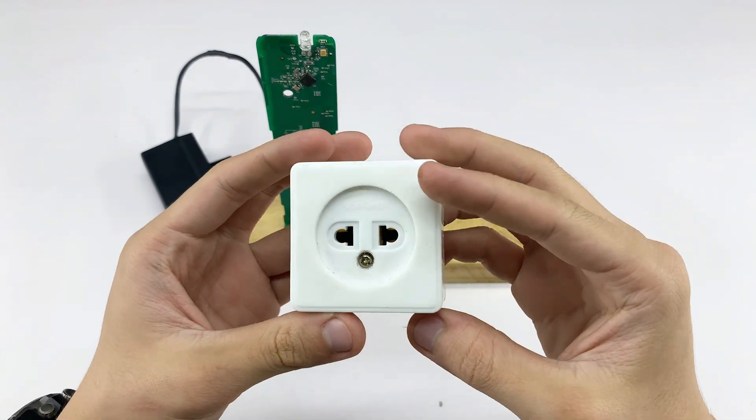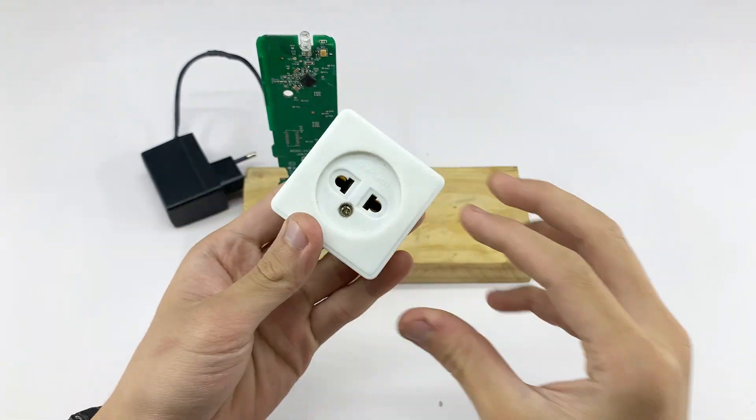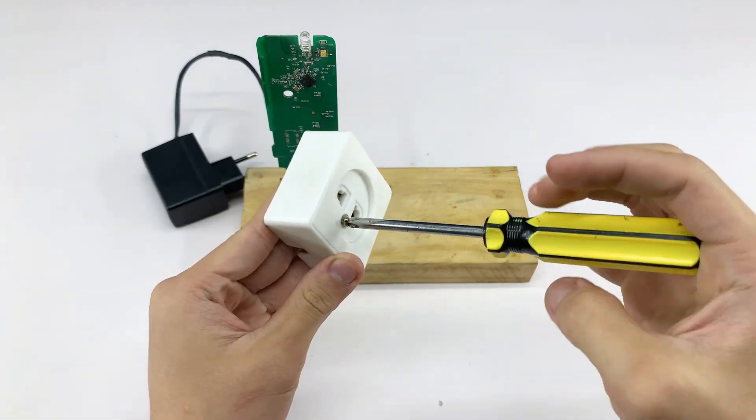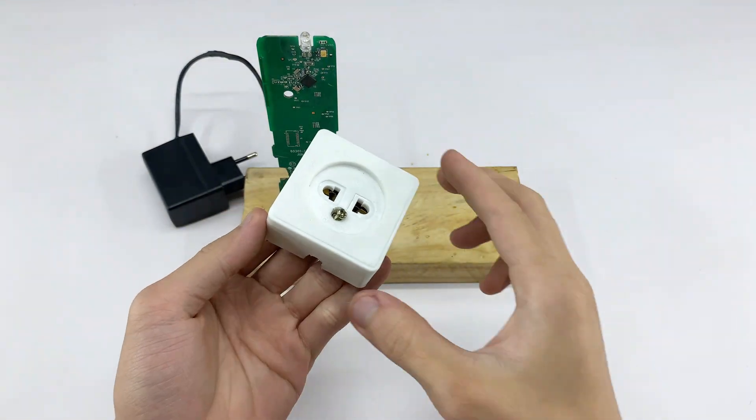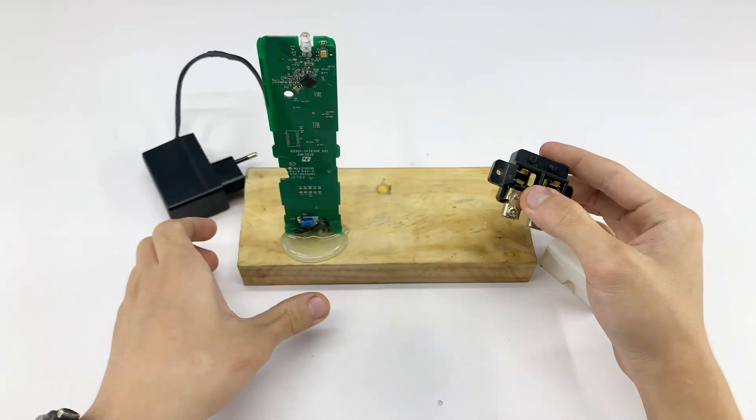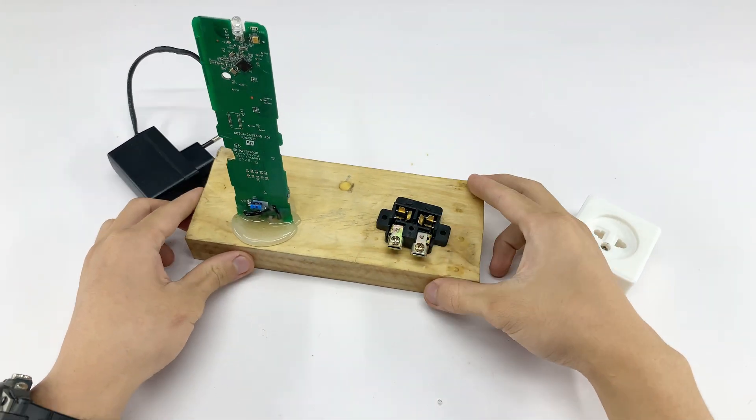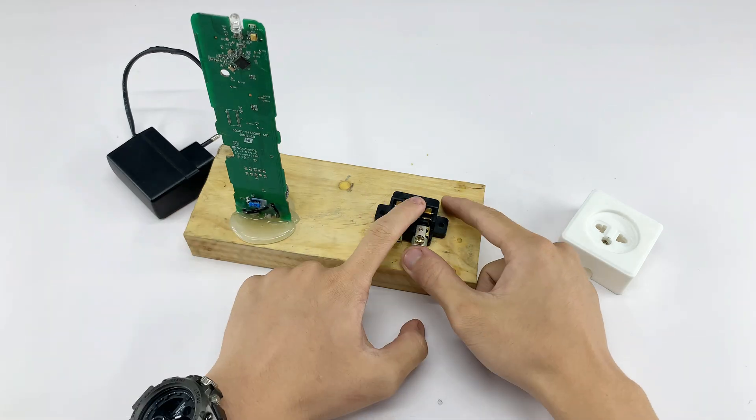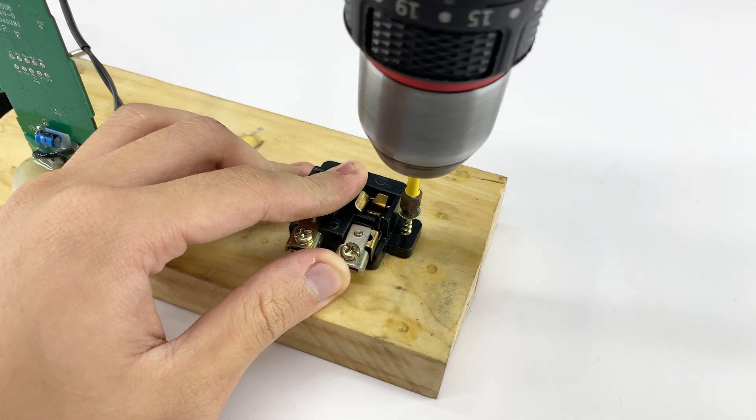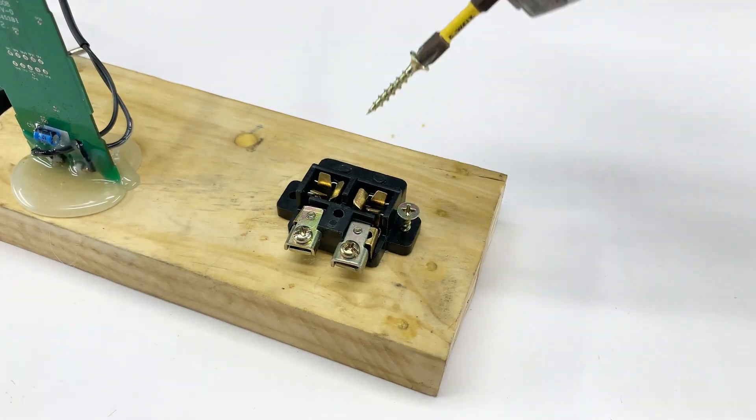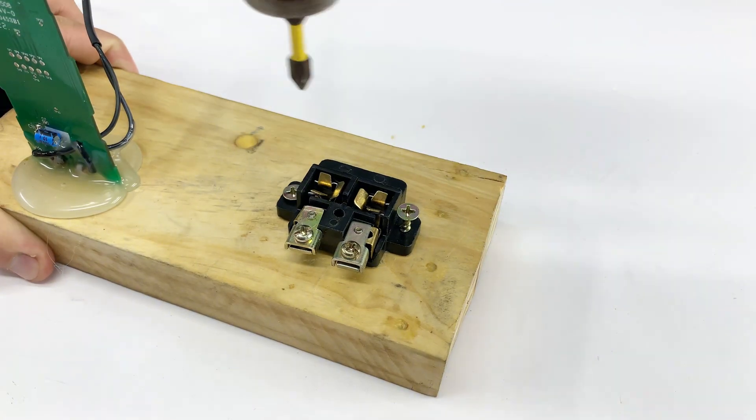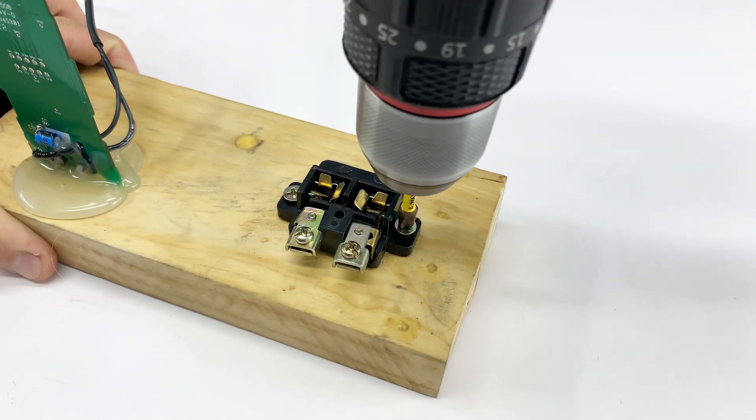To integrate everything cleanly, I'll take a standard wall socket. I'm disassembling it to use the internal connection terminals. I'll secure it to the wooden base next to our circuit board. Using a drill, I'm making pilot holes and then screwing the component firmly into place. This socket will be the connection point for our coaxial cable from the TV, providing a standard and convenient way to hook up our new antenna.